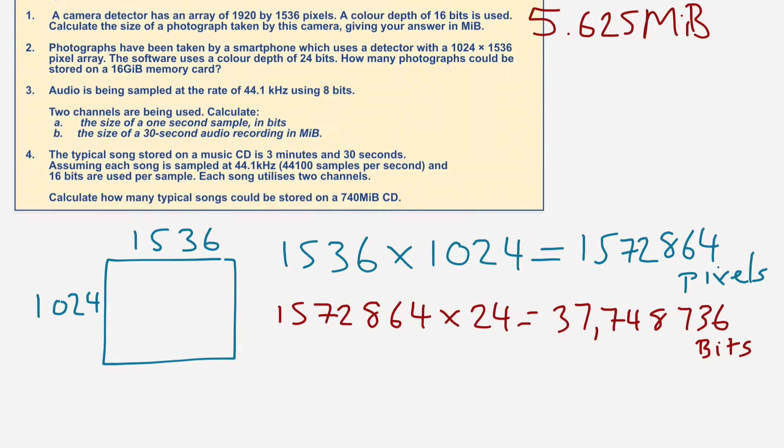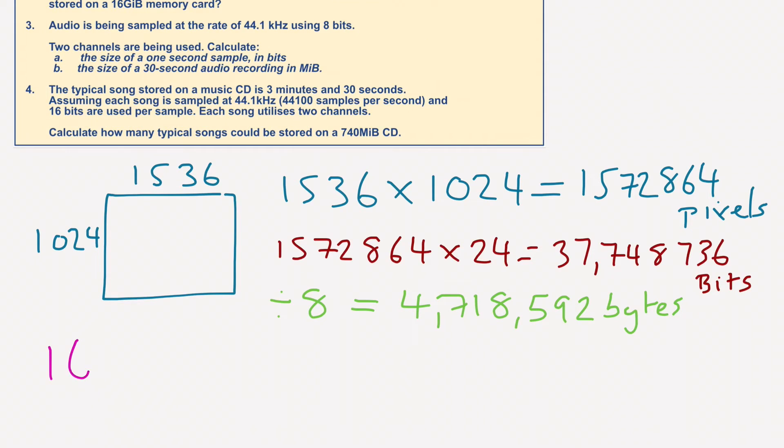So what do we do with that? We've got to divide it into bytes. If we divide that number by 8 to get it from bits into bytes, we end up with 4,718,592 bytes. But we need to turn this into - how many photographs could be stored on a 16 gigabyte memory card?